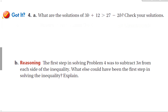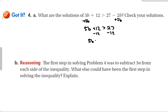In the guided problem, I see a positive 3 and a negative 2. Adding 2b to both sides first gives 5b plus 12 is greater than 27. Subtracting 12 from both sides gives 5b is greater than 15. Dividing out the 5 gives b is greater than 3.